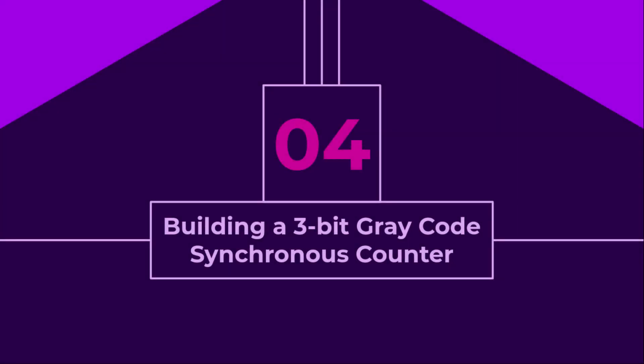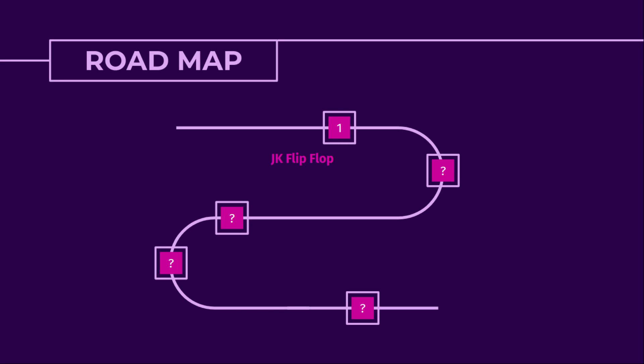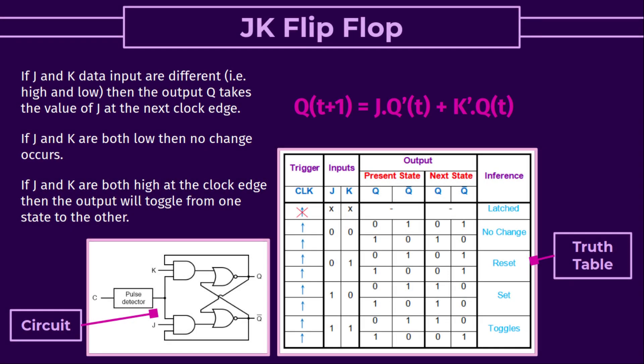In this subsection, we will build a 3-bit gray code synchronous counter. Firstly, we will understand what is a JK flip-flop and how it works. Assuming prior knowledge of flip-flops, if J and K data inputs are different — high and low — then output Q takes the value of J at the next clock edge. If J and K are both low, no change occurs. If both are high, the output toggles. The equation for the JK flip-flop is: Q(t+1) = J·Q'(t) + K'·Q(t).